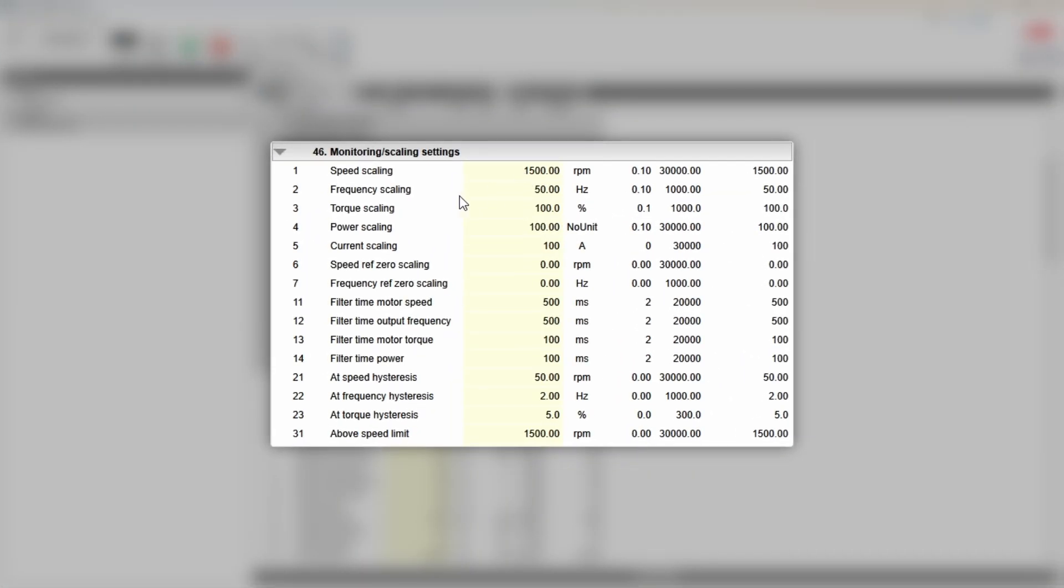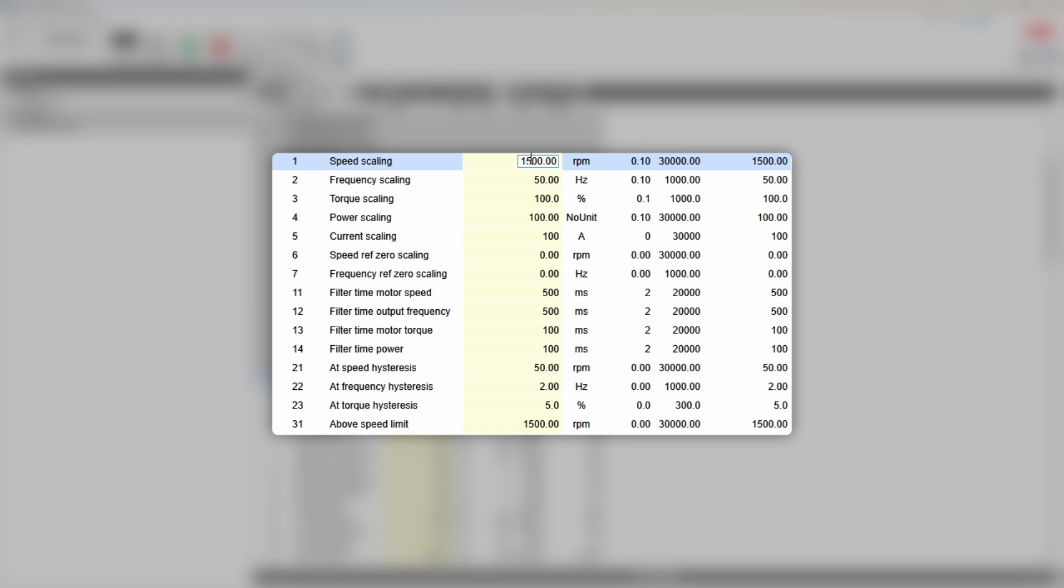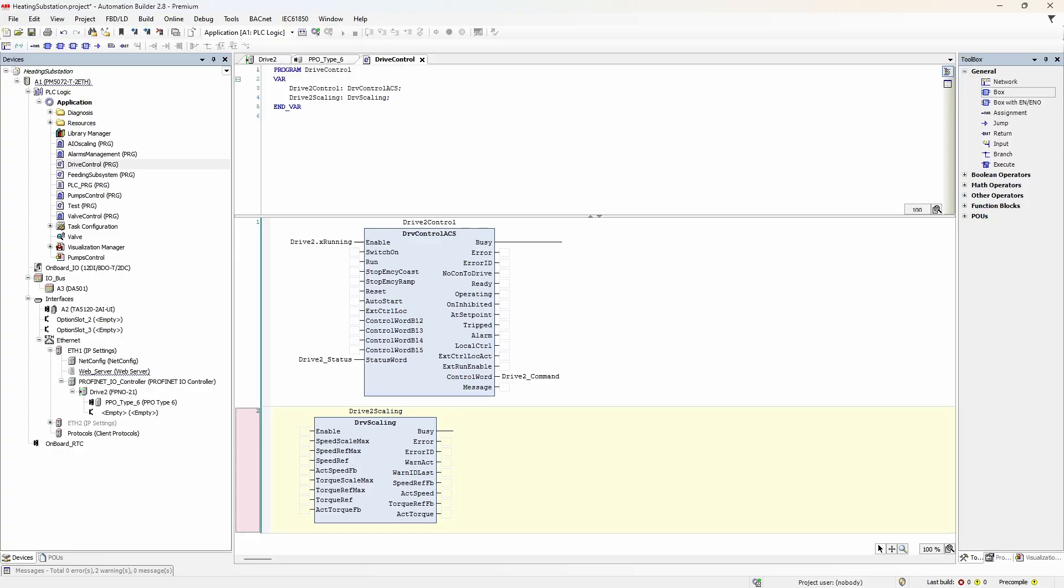But there is a small caveat. If you work with ABB drive profile, then the drive takes speed, frequency, or torque from parameters group 46 and scales them into range 0 to 20,000 for speed and frequency, or into range 0 to 10,000 for torque value. So if you have a motor with nominal speed 750 RPM, you would generally want to change the respective speed scaling parameter.